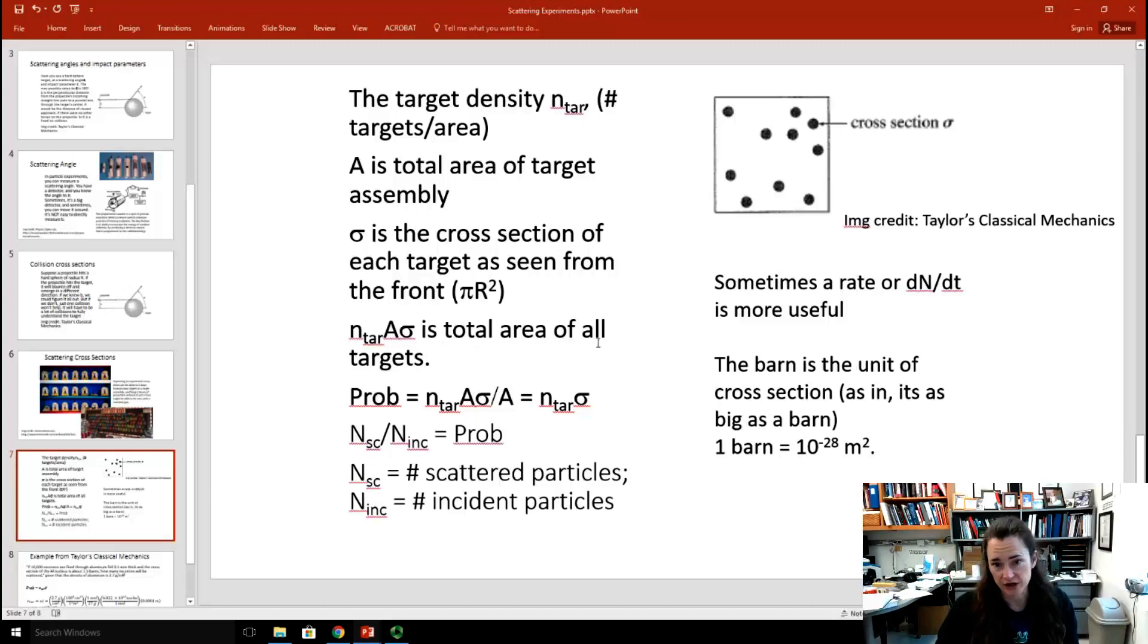If you multiply N sub tar times A times sigma, then that's the total area of all your targets. In that case, you're multiplying the number of targets per area times the area. So, that gives you the total number of targets. And then you're multiplying that times the area of each target. So, that gives you the total area of all the targets. The probability that you're going to have a scattering event is going to be equal to the total area of all your targets divided by the total area. Because it's more likely to scatter off of a target if those targets take up more of the cross-sectional area in your image. If you cancel out the area on the top and the bottom of that equation, then that gives us the probability of a scattering event is equal to N sub tar times sigma.